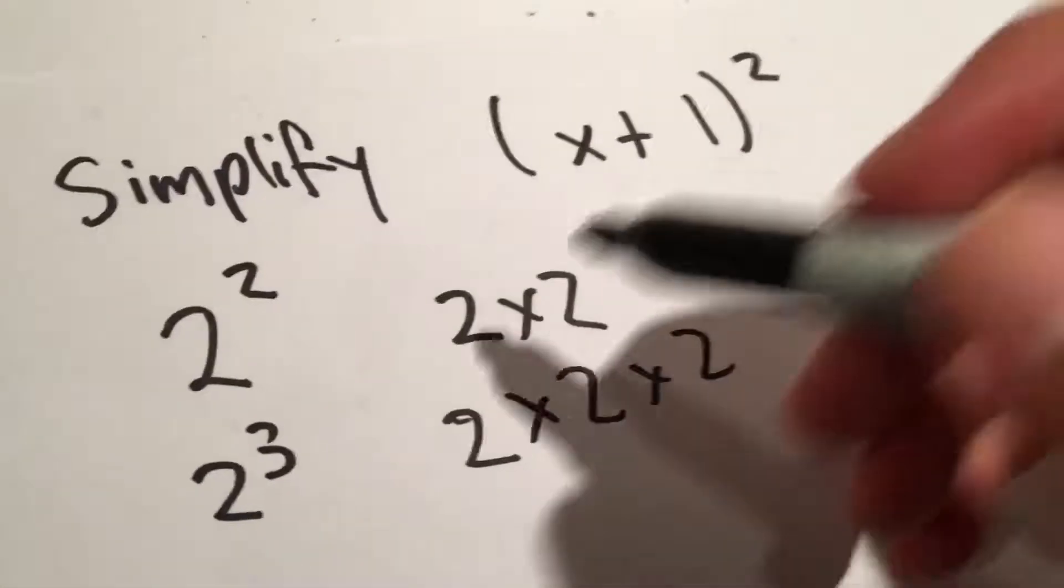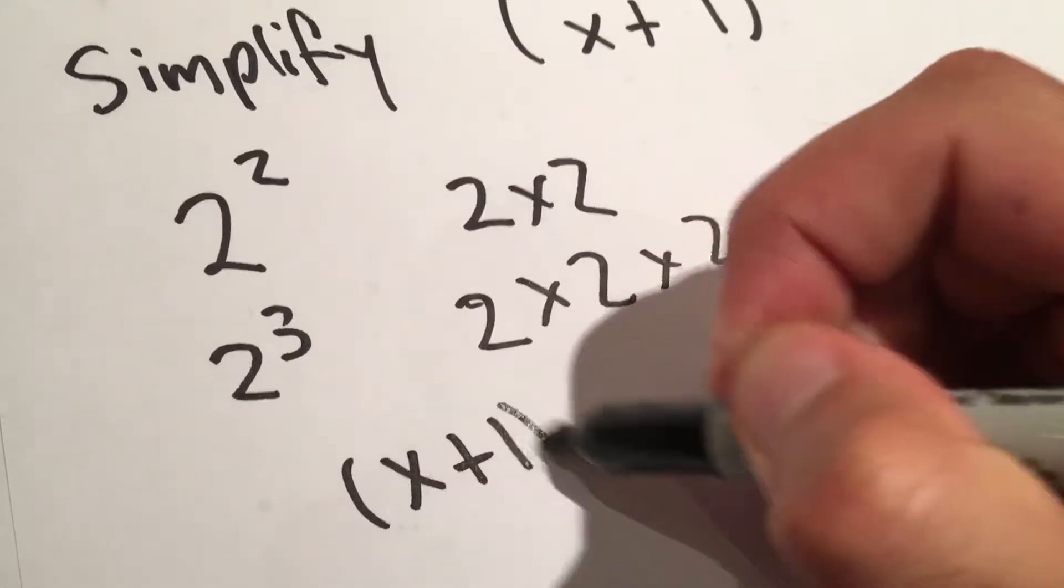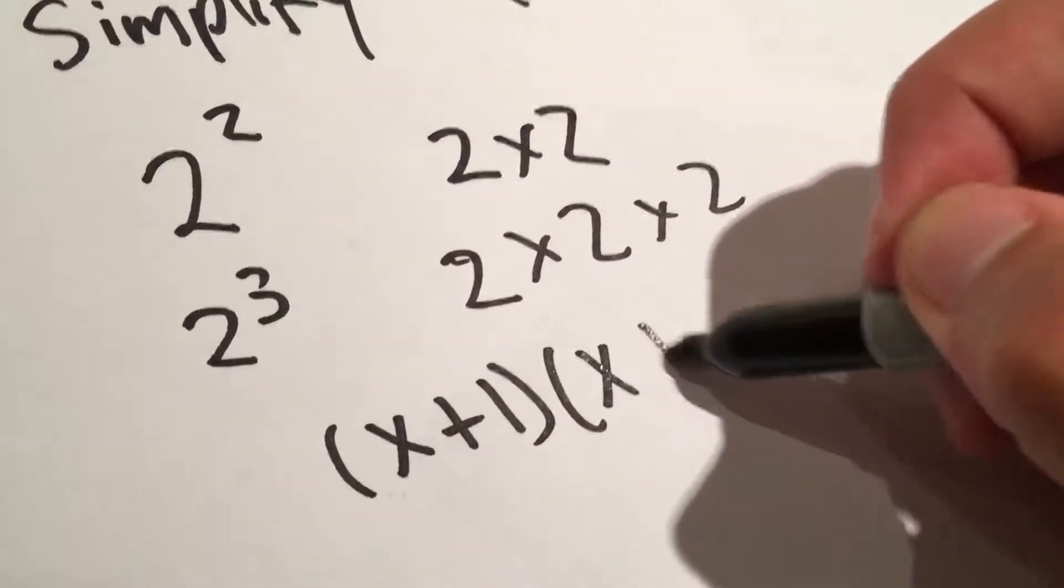So we just have this multiplied by itself, times x plus 1.